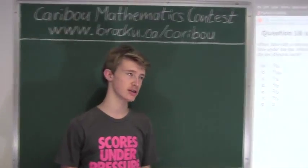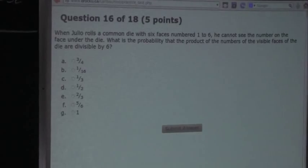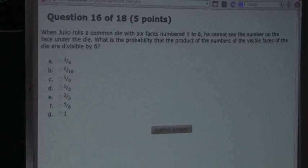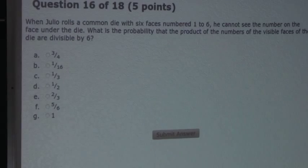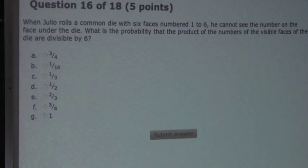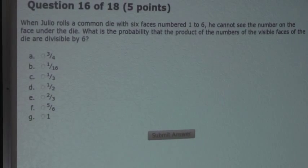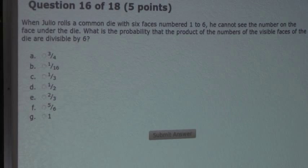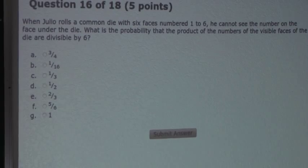So, the question is: When Julio rolls a common die with six faces numbered 1 to 6, he cannot see the number on the face under the die. What is the probability that the product of the numbers of the visible faces of the die is divisible by 6?